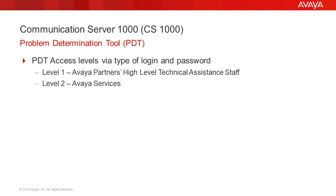There are two access levels to the PDT Shell. Level 1 is intended for use by Avaya Partners High Level Technical Assistance Staff, and Level 2 is used by Avaya Services. Level 1 allows the use of a subset of PDT commands while Level 2 allows the use of all the PDT commands.